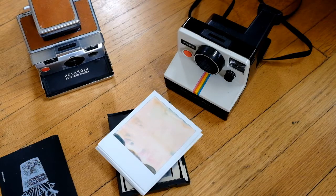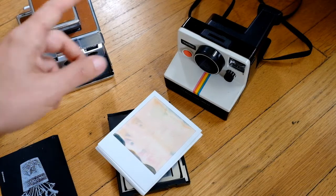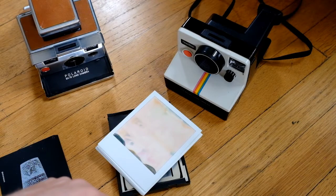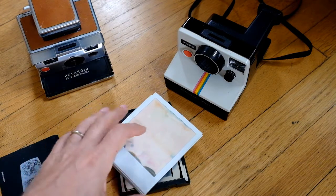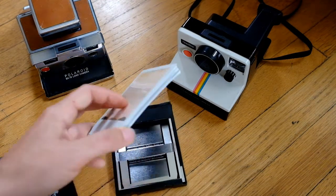Hey there. I've been shooting Impossible Projects film in my SX-70 and One-Step cameras for about six years now, and I've always wondered why their packs only have eight shots in them. Impossible claims the reason is because their film is thicker than the original Polaroid stock.